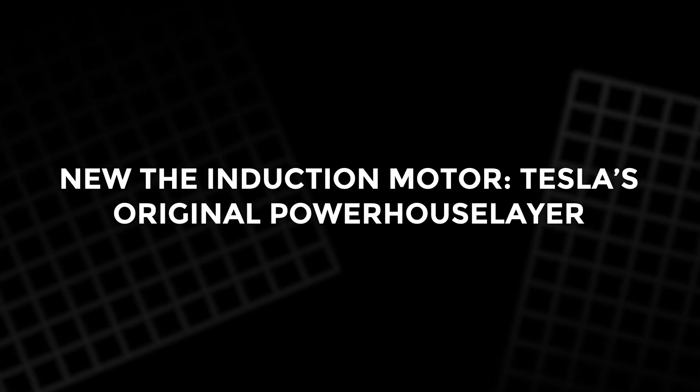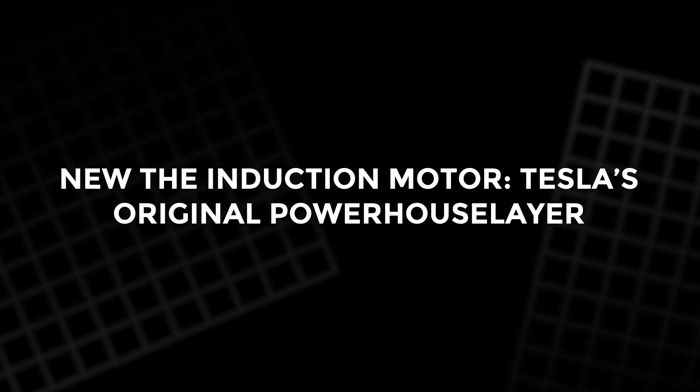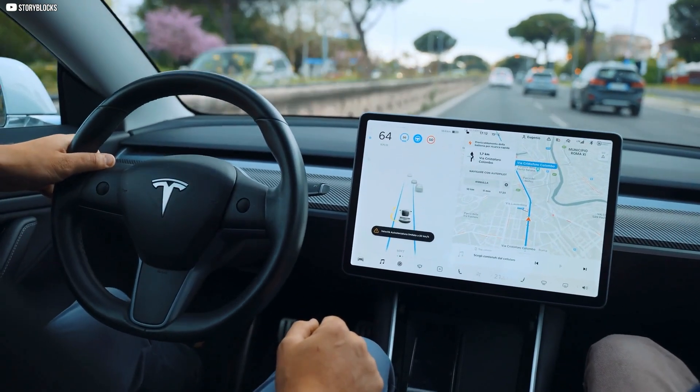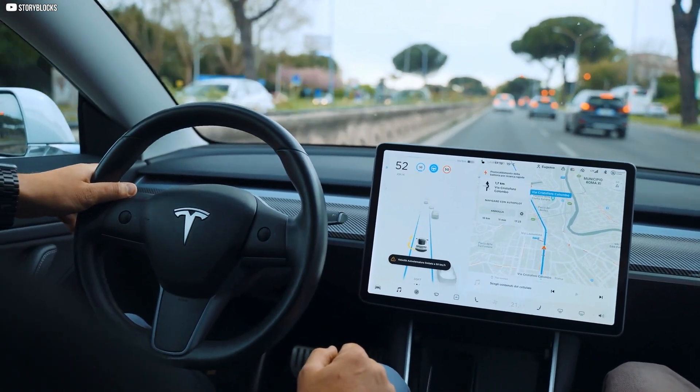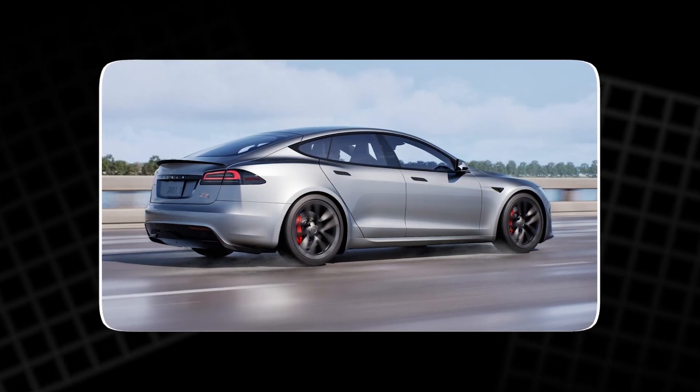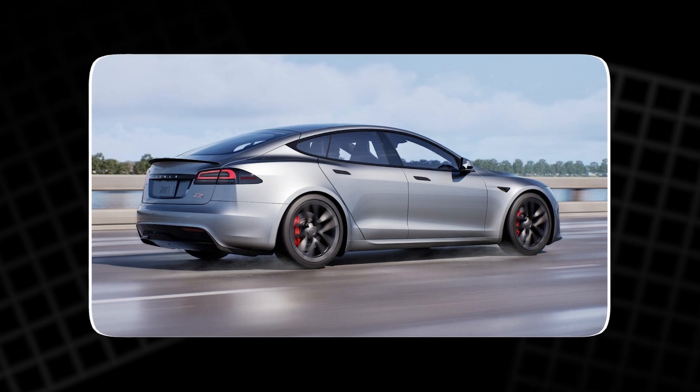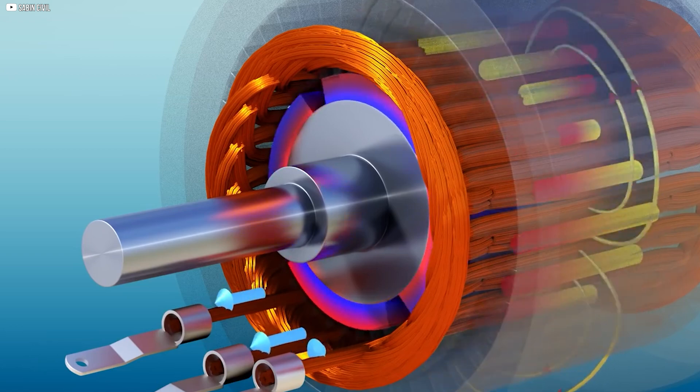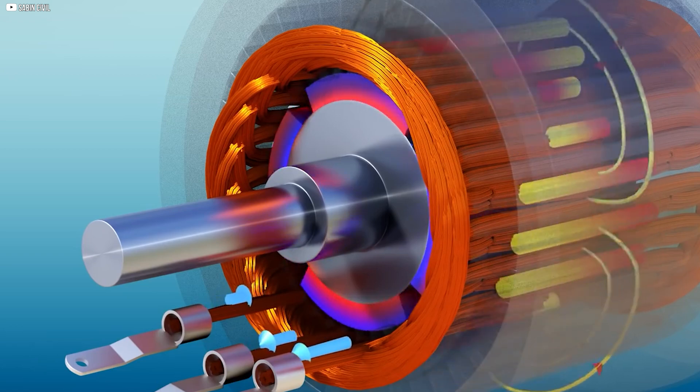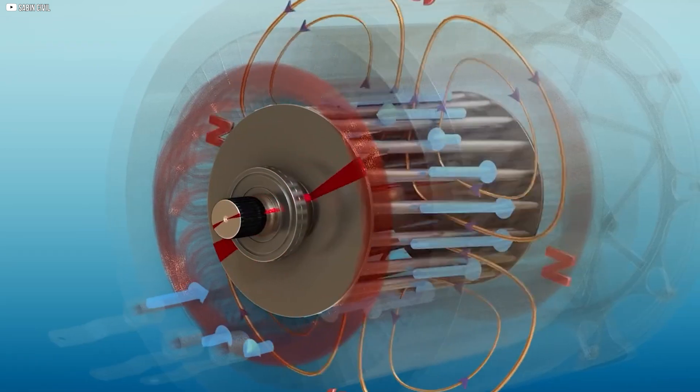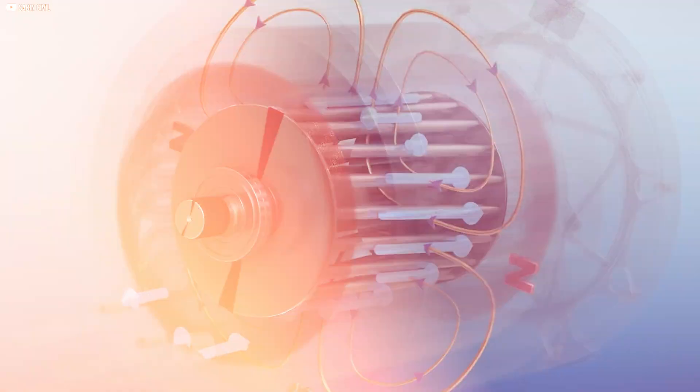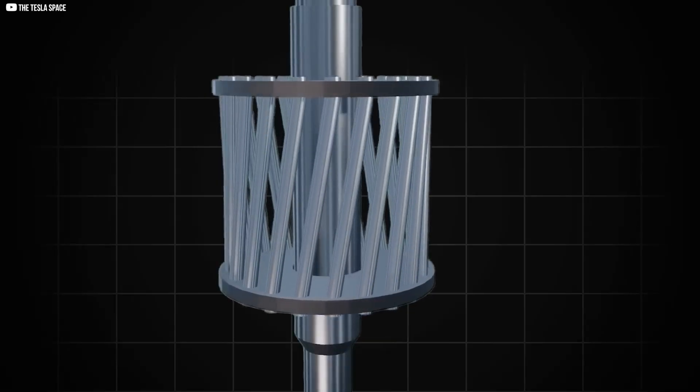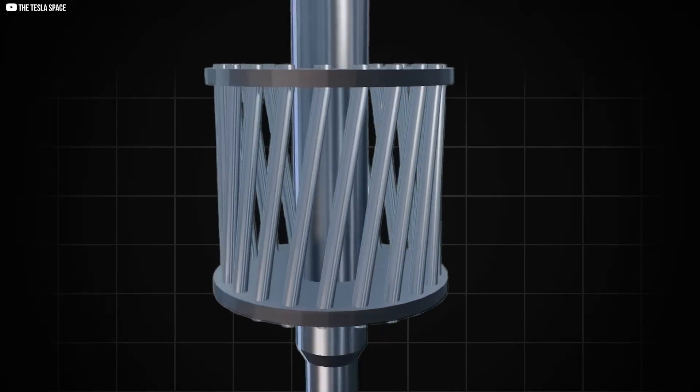The Induction Motor - Tesla's original powerhouse. To understand Tesla's innovation, it helps to first look at what they moved away from. The traditional Tesla Model S used an induction motor originally invented by Nikola Tesla. In this design, alternating currents from the battery flow through the stator windings, creating a rotating magnetic field. This field induces currents in the rotor's conducting bars, generating a force that spins the rotor and creates motion.